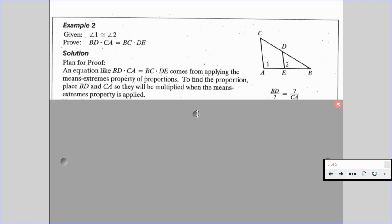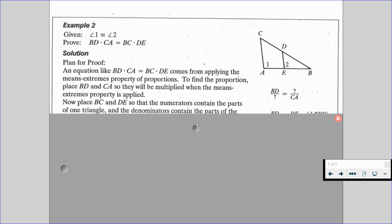Now place BC and DE so that the numerators contain the parts of one triangle, the denominators contain the parts of the other triangle, shown over on the right-hand side now.